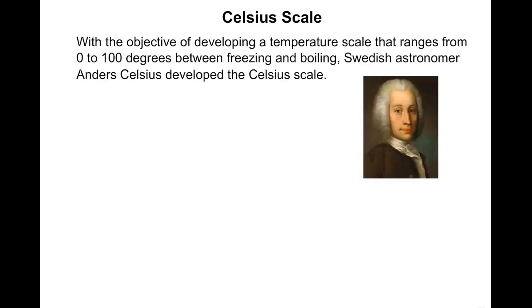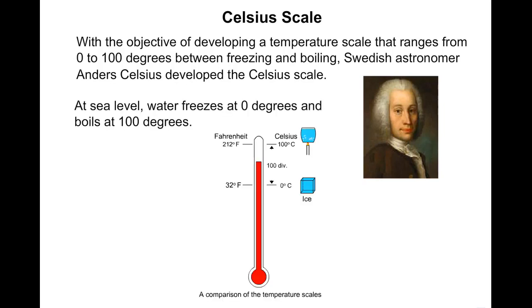Celsius scale. With the objective of developing a temperature scale that ranges from 0 to 100 degrees between freezing and boiling, Swedish astronomer Anders Celsius developed the Celsius scale. At sea level, water freezes at 0 degrees and boils at 100 degrees.